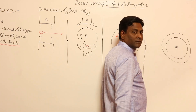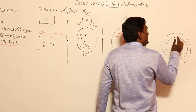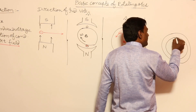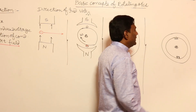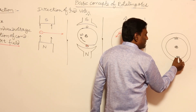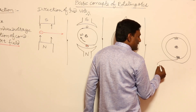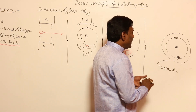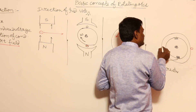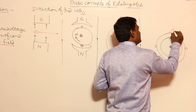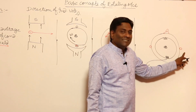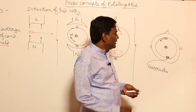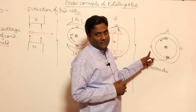This is the rotor. Let me keep one conductor here and another conductor here. Let me keep dot current here and cross current here — these are currents, not voltages. Let me have two conductors here on the stator. So, let me keep two conductors on the stator and rotate the rotor in this direction. Which type of induced voltages will be there in the stator? Let us see.